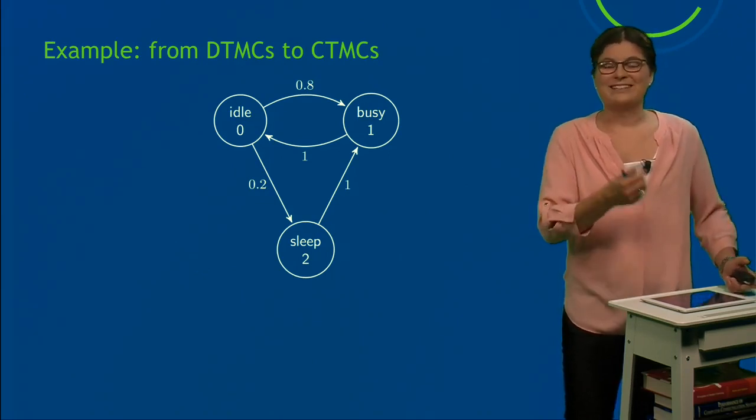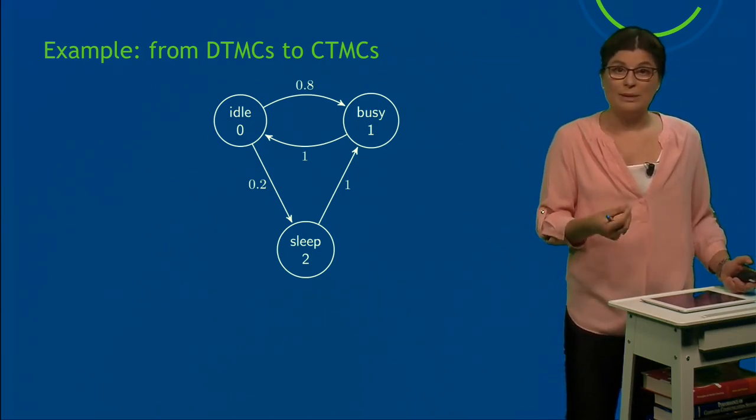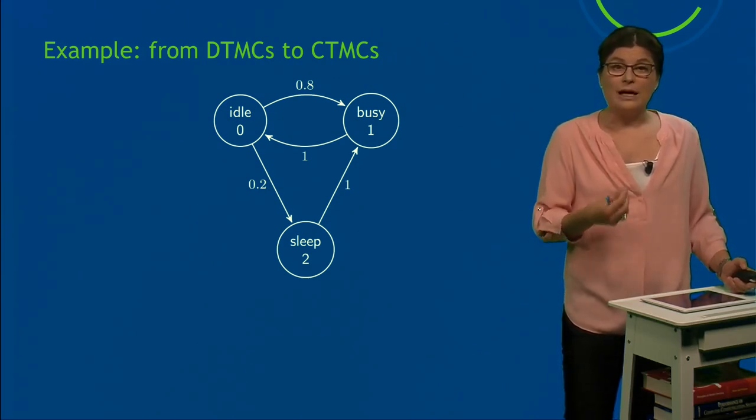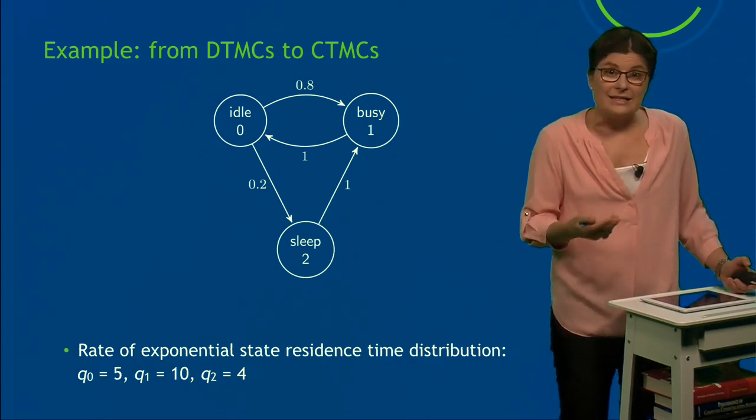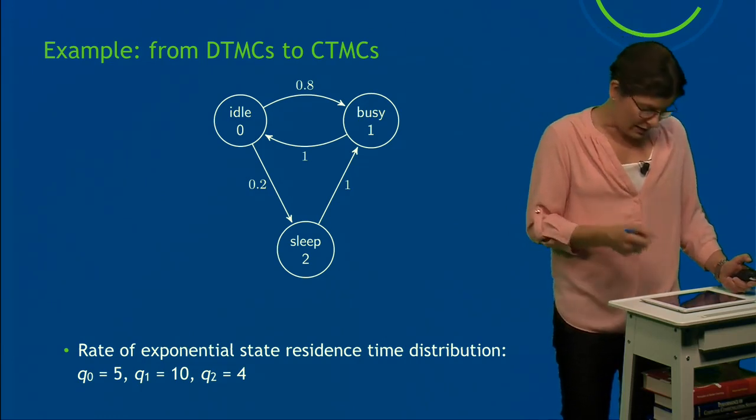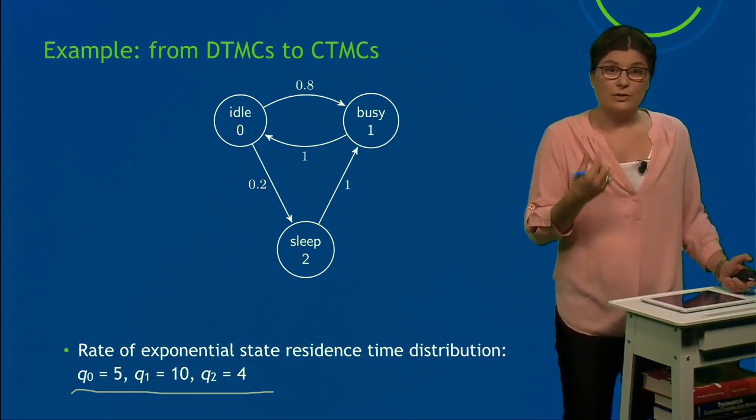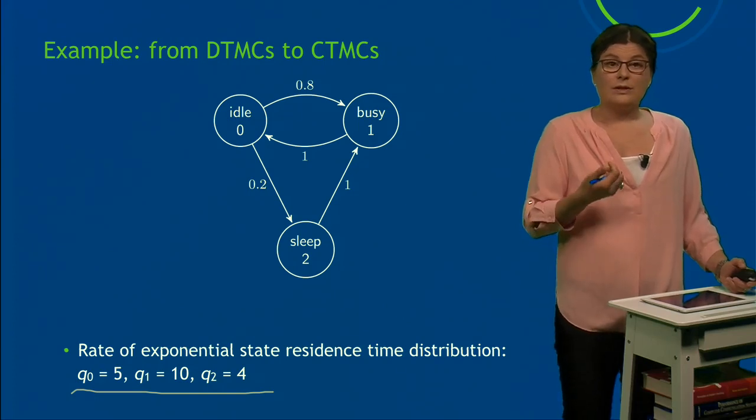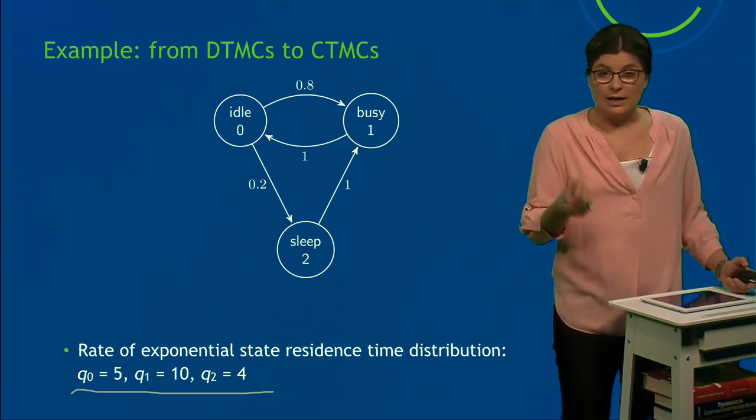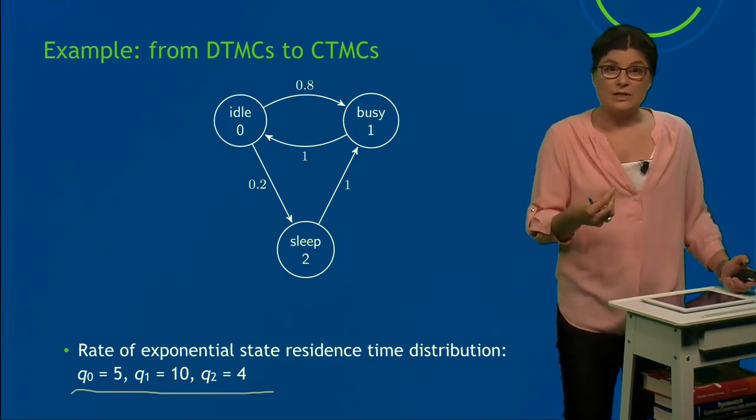Let's take a look at a slightly more difficult example. Now we have three states. We have a system that can be idle, busy, or asleep. And this is now modeled as a DTMC, as you can see from the probabilities on the transitions. Now I want to make a CTMC out of this, and I have to specify a random variable for every state. So I have to add an exponential variable to each state. And these are the rates I'm going to use: for state 0, I add a random variable with rate 5; state 1 gets 10, and state 2 gets 4. Just for future reference, larger here means faster. So if you get a larger rate, it means you will leave the state more quickly.